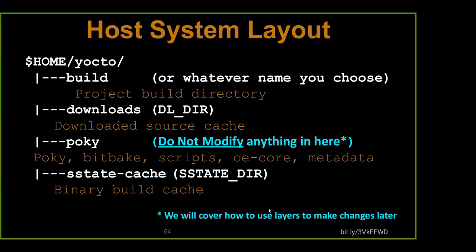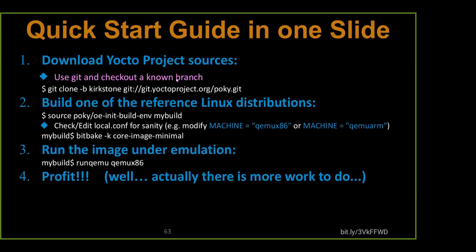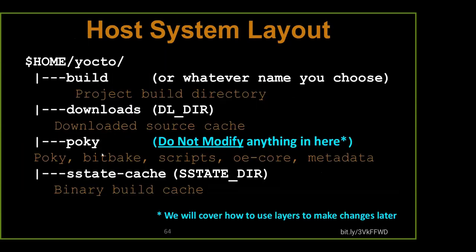We're going to cover how to use the layers and how to change them. Even though there's stuff in Poky, it's not a good idea to modify Poky directly. Especially if you're using the git method — what happens to all your changes to meta-poky when you update and do a pull? Your changes will get reverted. Let's make sure that doesn't happen by not modifying something in meta-poky, but instead creating our own meta-foo-OS layer, for example — we'll talk about that in a bit.